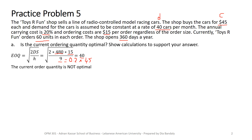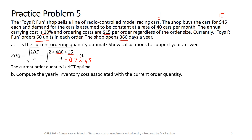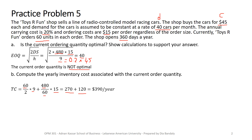Many stores choose not to order the optimal quantity for various reasons. For Part B, we find the inventory cost at the current order quantity Q = 60. Total cost = holding + ordering = (Q/2) × H + (D/Q) × S = (60/2) × 9 + (480/60) × 15. We notice holding and ordering costs are not equal, which is expected since 60 is not optimal, giving an annual total cost of $390.